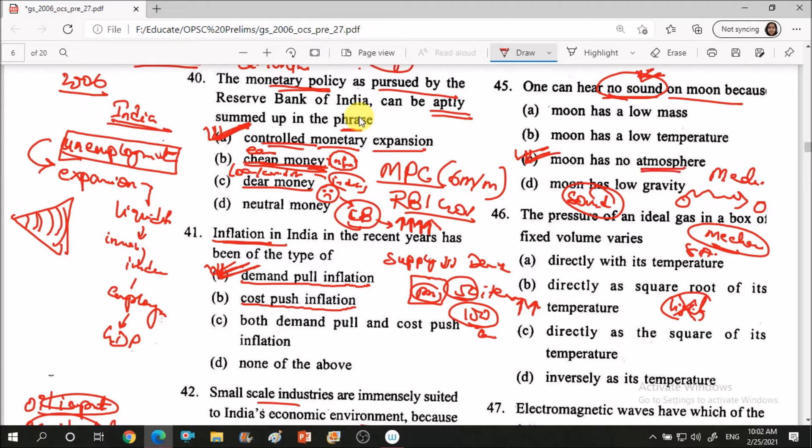Second thing, moon has no atmosphere. Why is it that moon has no atmosphere? As you know, moon's size is very small. Moon's size is very small, so moon has no strong magnetic field, like our earth has magnetic field around it, which is a strong magnetic field.